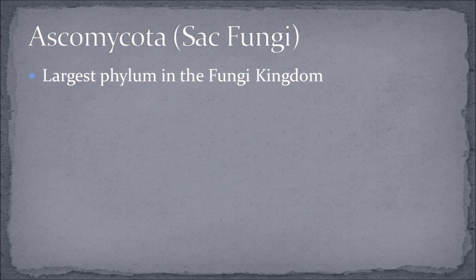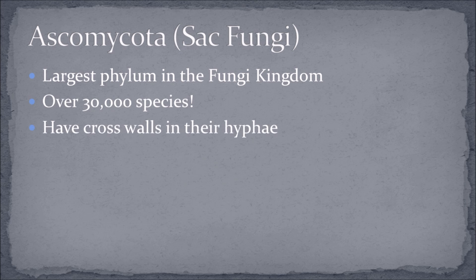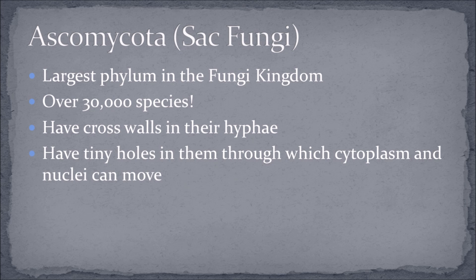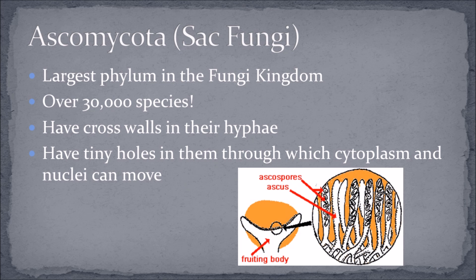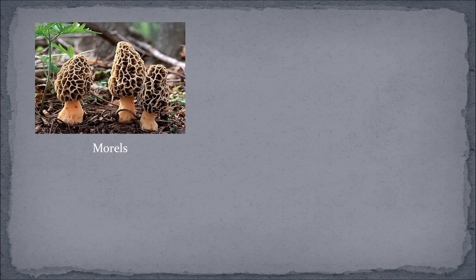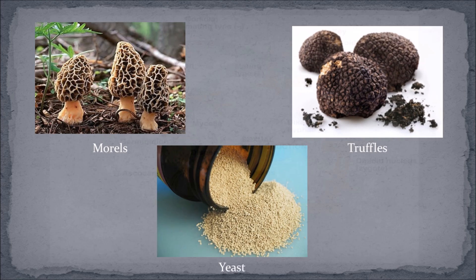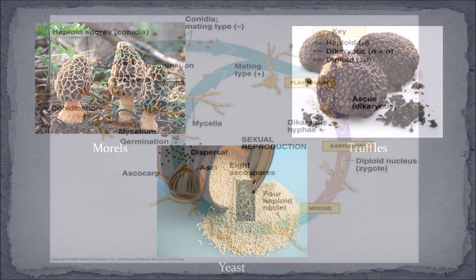The next phylum is called ascomycota, or sac fungi. This is the largest phylum in the kingdom, with over 30,000 different species. Ascomycetes have cross walls in their hyphae, meaning that there are individual cells in the organism. The cross walls have tiny holes through which cytoplasm and nuclei can move. Morels, truffles, and yeasts belong in this phylum.